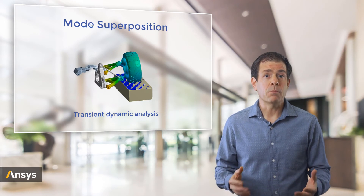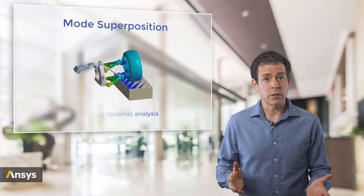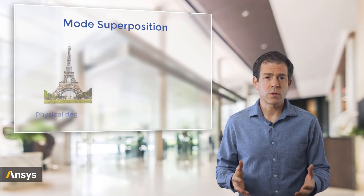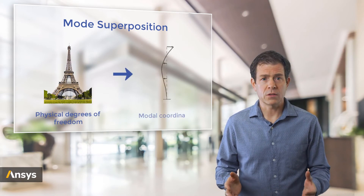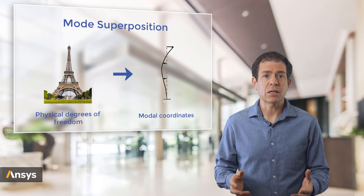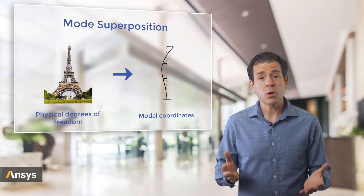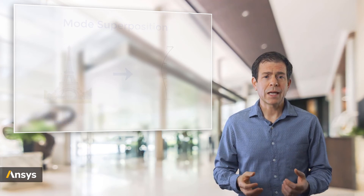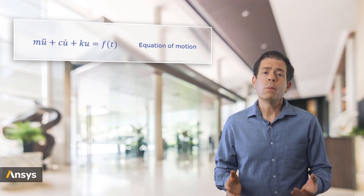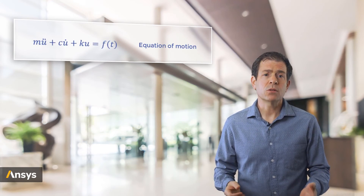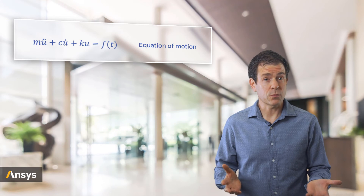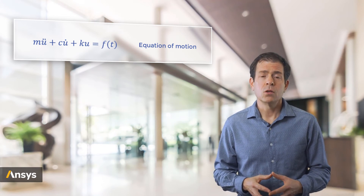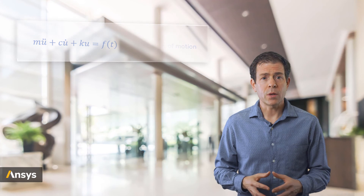We should clarify that the method of changing the degrees of freedom, as we have done here, from physical degrees of freedom to modal coordinates, is a general technique that can be employed to solve a set of equations more efficiently. Throughout these structural mechanics lessons, we are generally solving the equations of motion, but much like the mode superposition method was used to change the degrees of freedom to solve more efficiently, we can solve other sets of equations in structural mechanics using different methods.